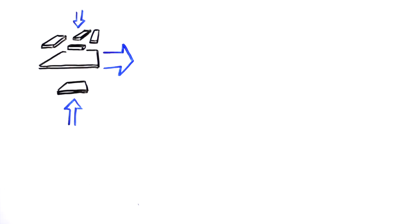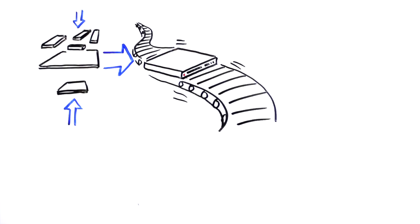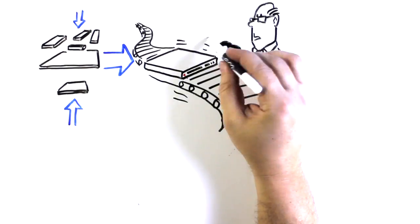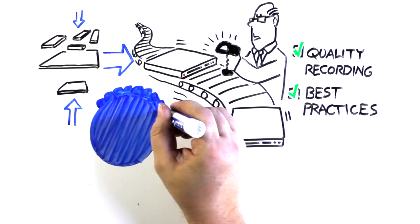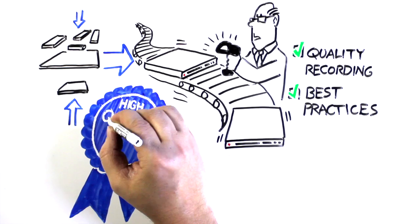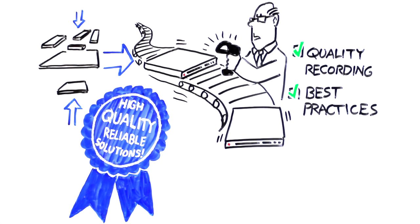Throughout the manufacturing process, production testing eliminates non-conformities, while shop floor control systems drive quality recording and best practices. All designed to deliver high-quality, reliable solutions that you can trust.